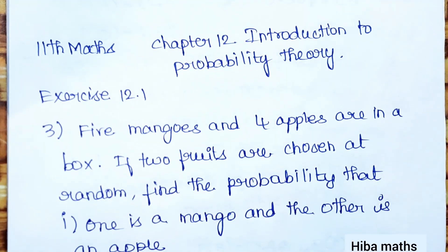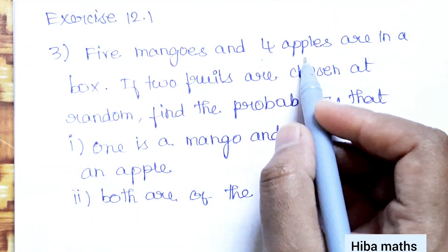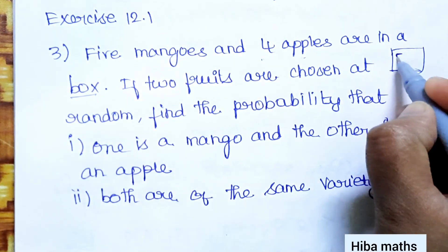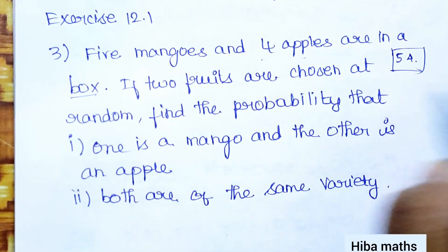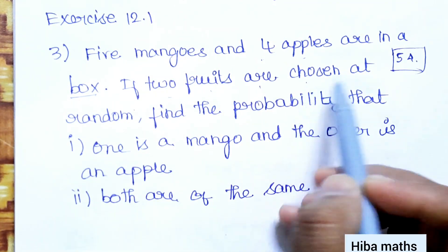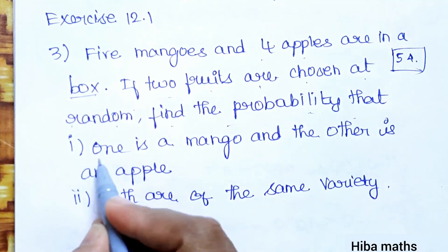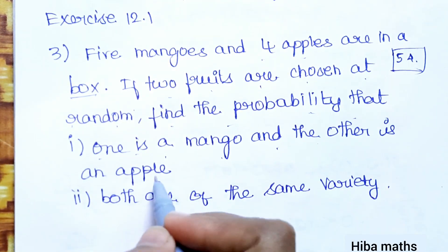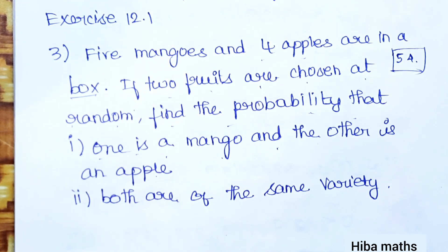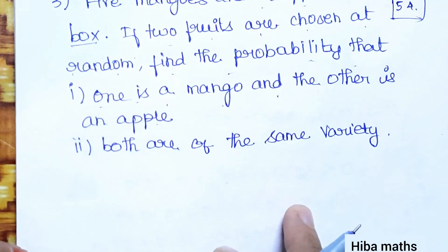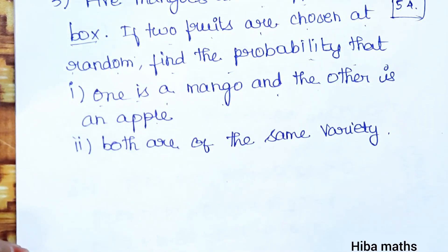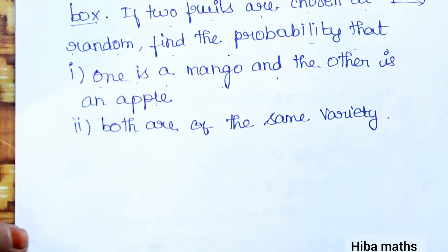Hi students, welcome to Heba Max 11 Standard, Chapter 12: Introduction to Probability Theory, Exercise 12.1, third question. Five mangoes and four apples are in a box. If two fruits are chosen at random, find the probability that: first condition - one is a mango and the other is an apple; second condition - both are of the same variety, meaning two apples or two mangoes.